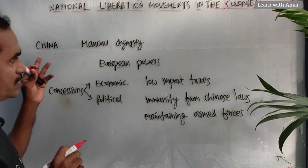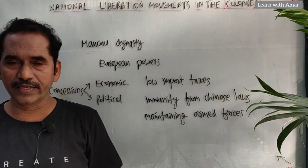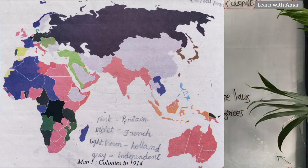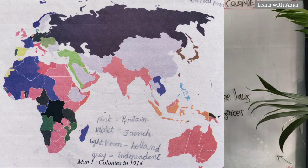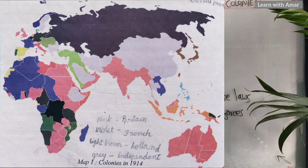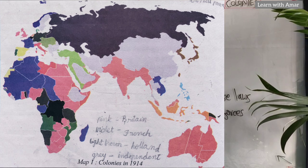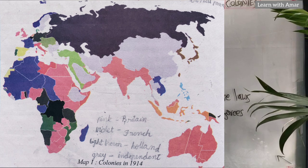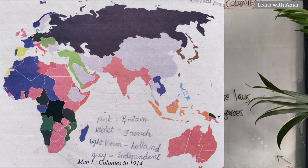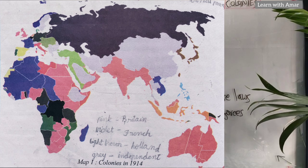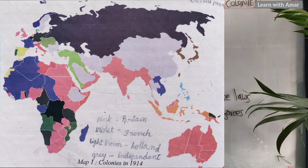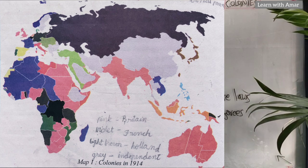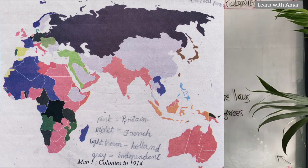First, before going to discuss about China, here is a map given for the year 1914. You observe this map. The pink color countries are known as Britain colonies. The blue color countries are known as France colonies. The gray color — like China, Afghanistan, Iran, a part of Saudi Arabia, and Ethiopia in Africa — are known as independent countries.